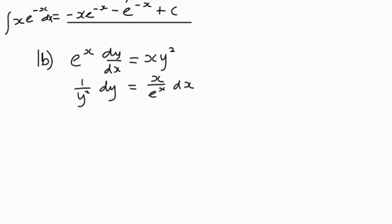So we can say on the left-hand side, we've got y to the power negative 2 dy, and we can write the right-hand side as x, e to the negative x dx, and then we're ready to integrate.